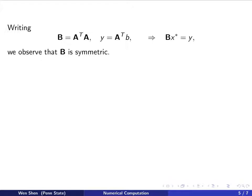Now we can write B to be A^T times A, the coefficient matrix, and y denote the right hand side A^T times b, and we have the system Bx star equals y to solve. Note that the matrix B here now is symmetric.